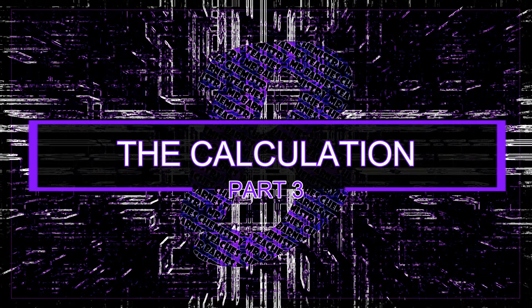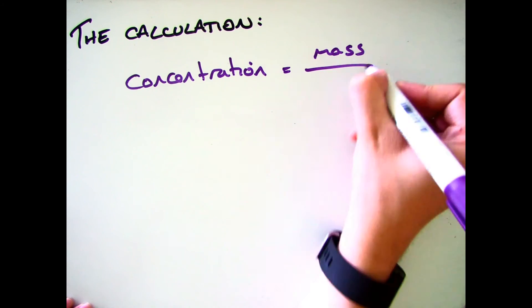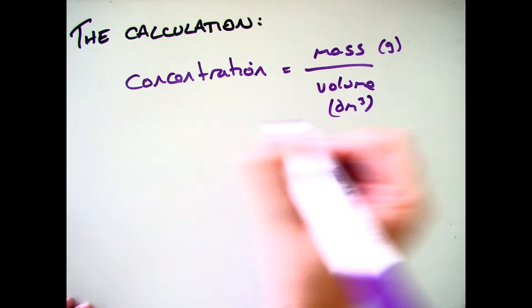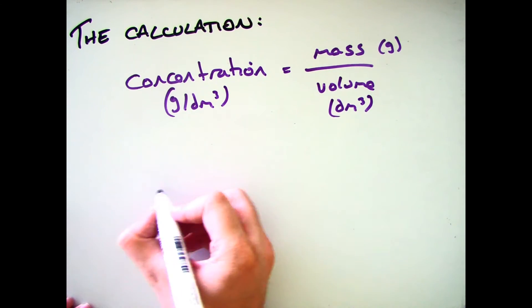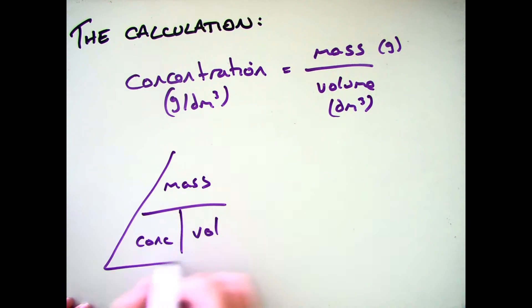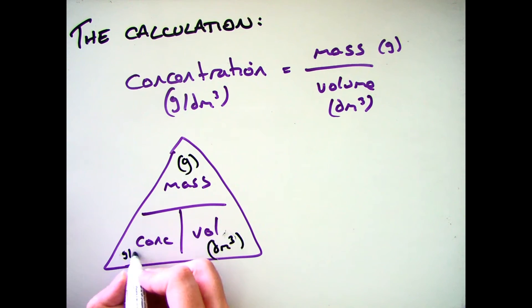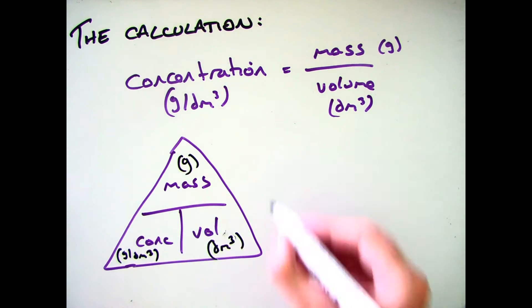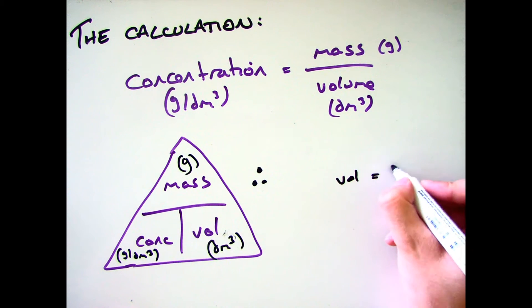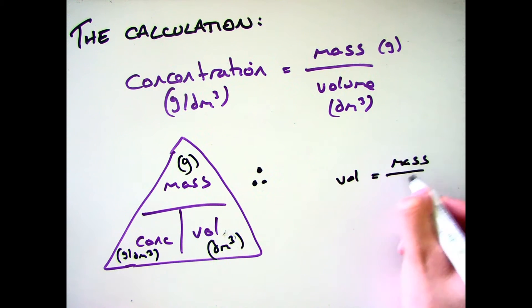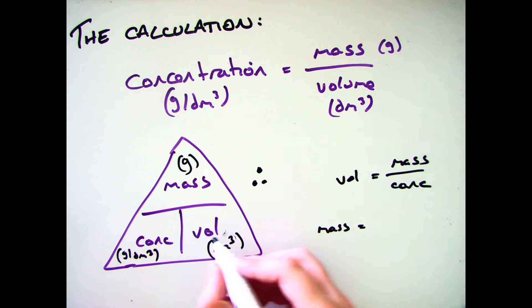The calculation you need to use is: concentration equals mass in grams divided by volume in decimetres cubed, which gives you a concentration in grams per decimetre cubed. You also need to be familiar with rearranging the equation: volume is mass divided by concentration, and mass is concentration times volume.